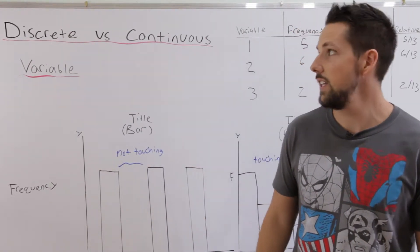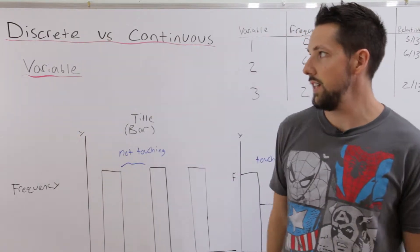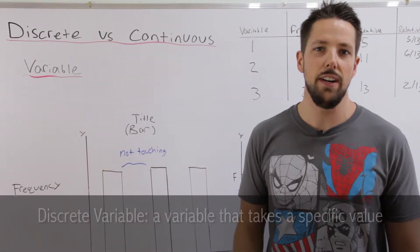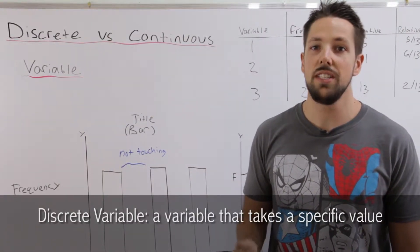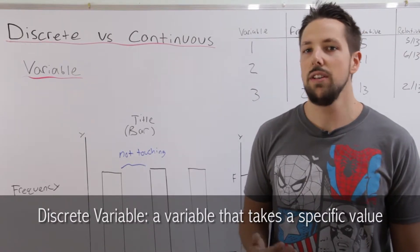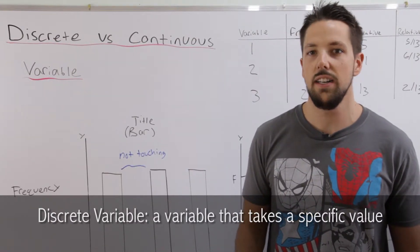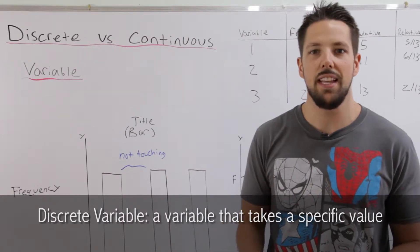There's two types of variables that we're going to look at in this unit: discrete and continuous variables. Discrete variables can take on only specific values. So a discrete variable is something like hair color. You can have blonde hair, you can have brown hair, but there's nothing in between.